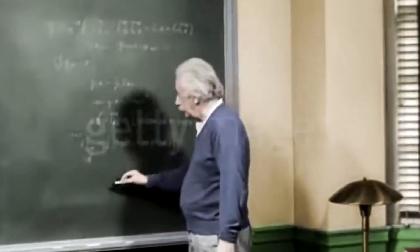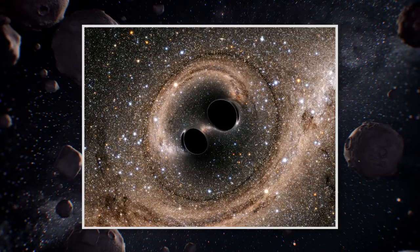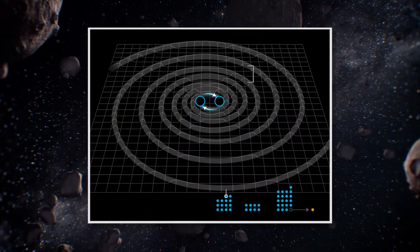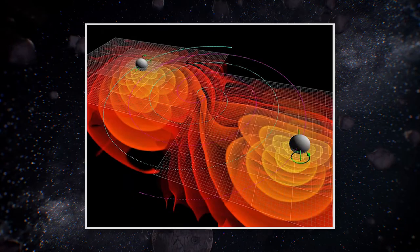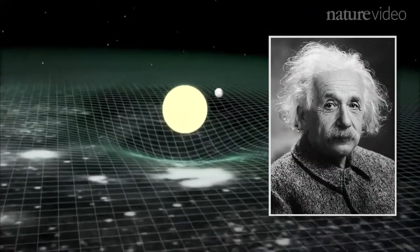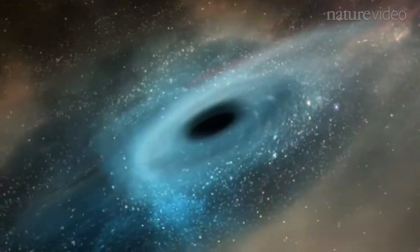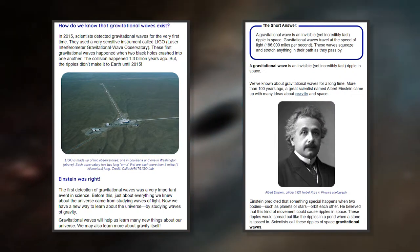When Albert Einstein first proposed his theory of general relativity, he predicted the existence of ripples in spacetime. These ripples, called gravitational waves, are created by massive objects moving through space. Einstein believed that these waves could travel outward from their source, carrying information about the events that created them. However, it took a hundred years for scientists to prove it through evidence.